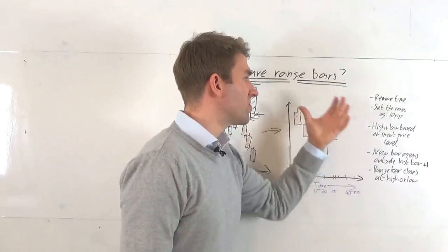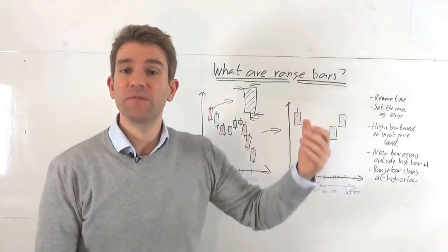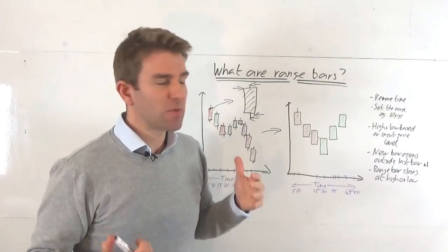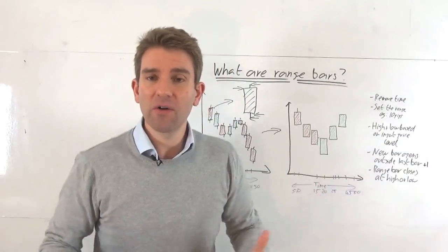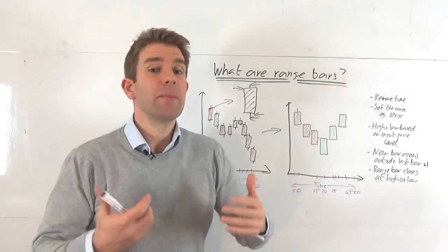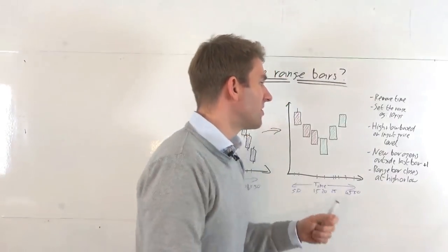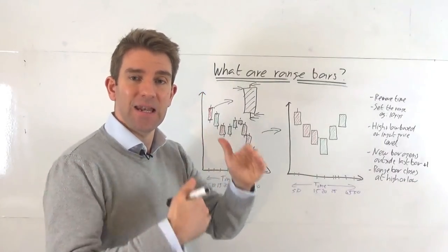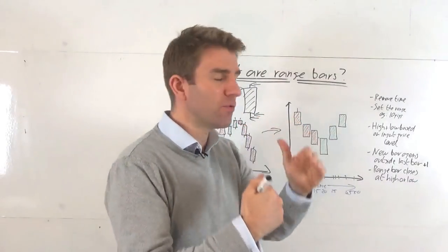So for example, we could say 10 pips, 100 pips, 50 ticks, 50 cents, whatever unit we're trading in, that's what we'd set it to. So if we're trading a currency pair, for example, and we're day trading, perhaps we want to set it to 10 pips. Now that means that the high and low is always going to be 10 pips range. That's how it's formed.